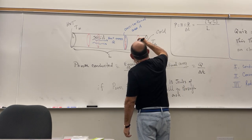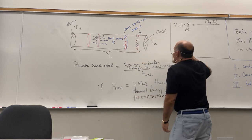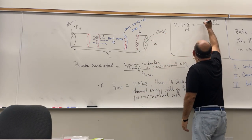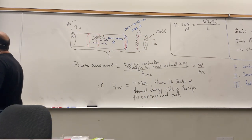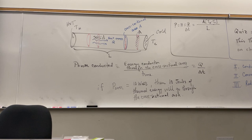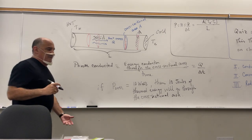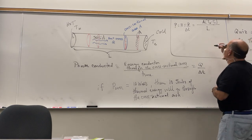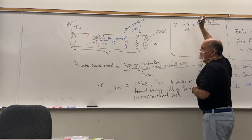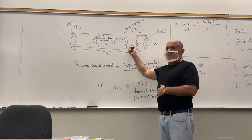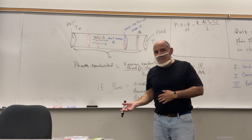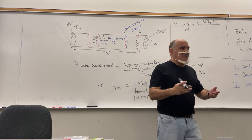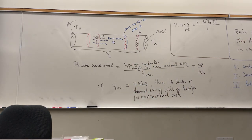The power is also proportional to the cross-sectional area A through which energy flows. There is also a parameter K — the thermal conductivity, or coefficient of thermal conduction — which depends on the material (iron, aluminum, copper, etc.) and how easily that material can transport energy from hot to cold.